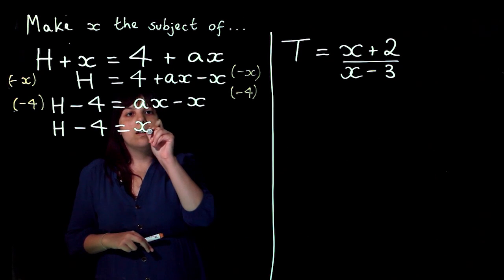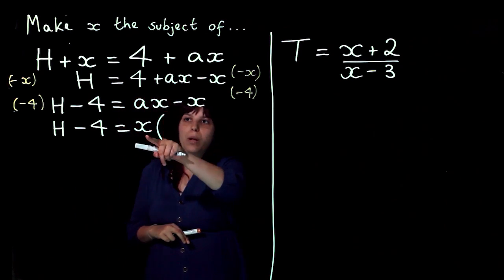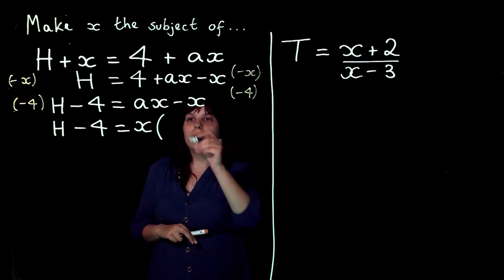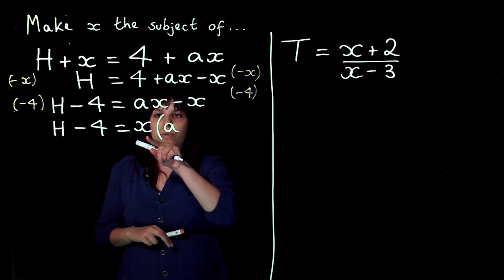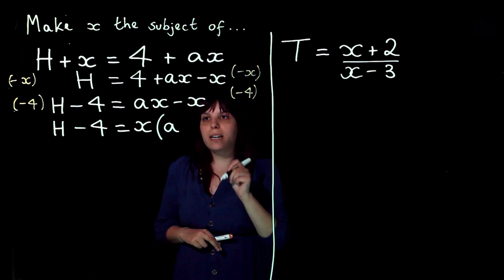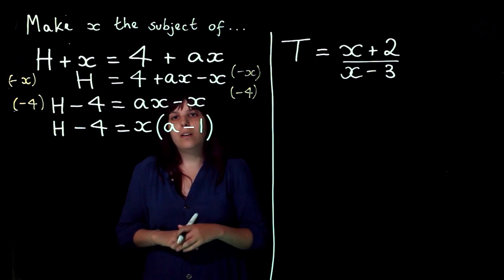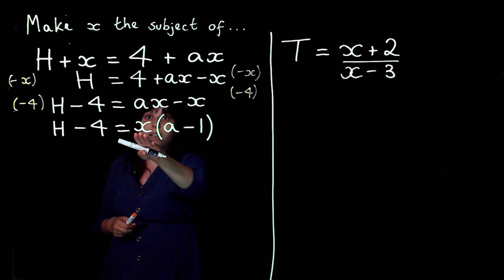then what do I multiply x by to give me ax? That's a. And what do I multiply x by to give me minus x? That's minus 1. So now I have just one x.